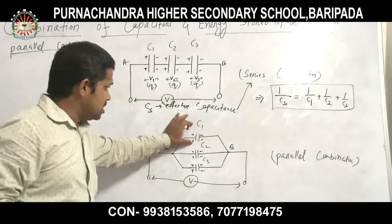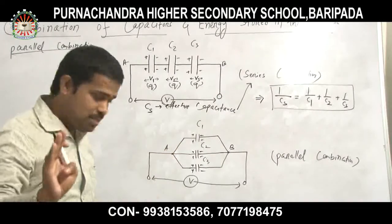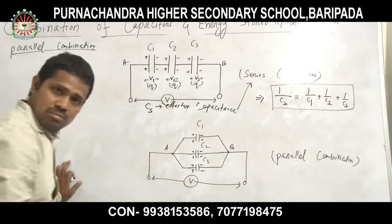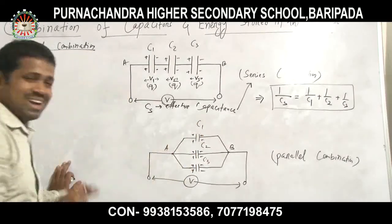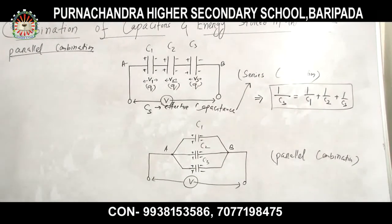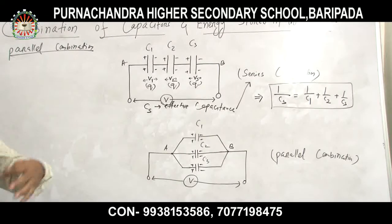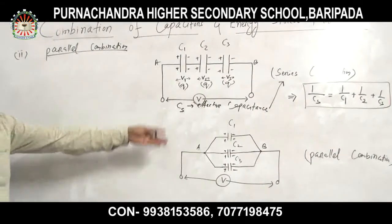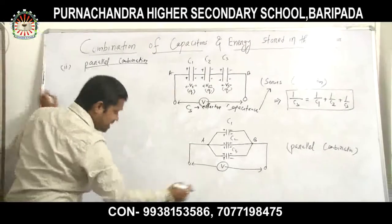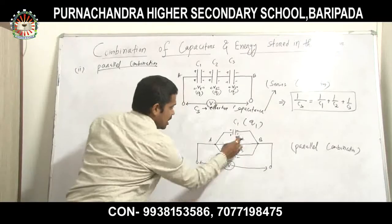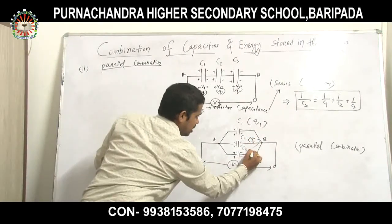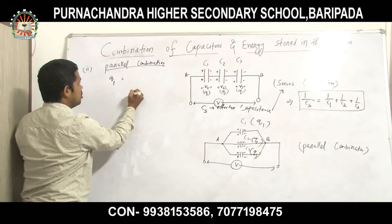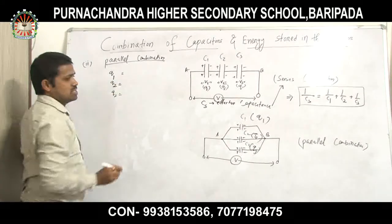In parallel combination, the potential remains the same — V across C1, V across C2, V across C3. But the charge is different: Q1 at C1, Q2 at C2, Q3 at C3. Using Q = CV: Q1 = C1·V, Q2 = C2·V, Q3 = C3·V. The potential is the same but the charge is different.